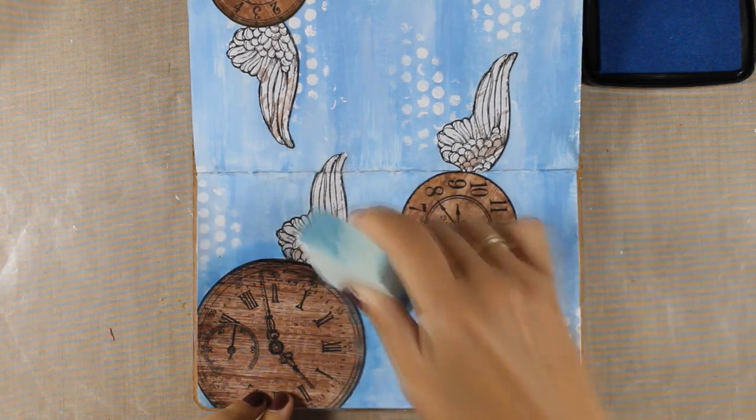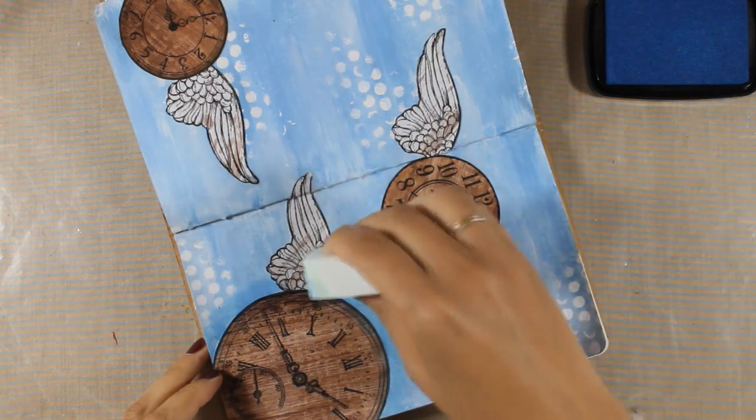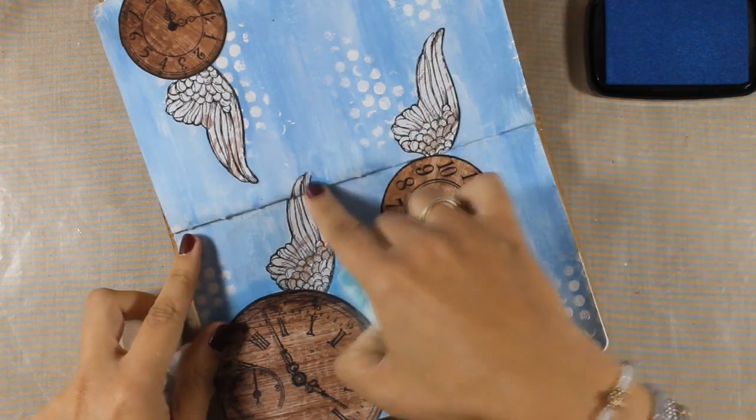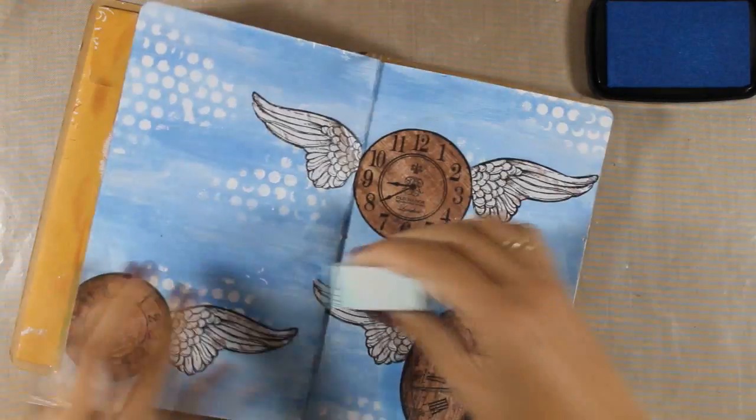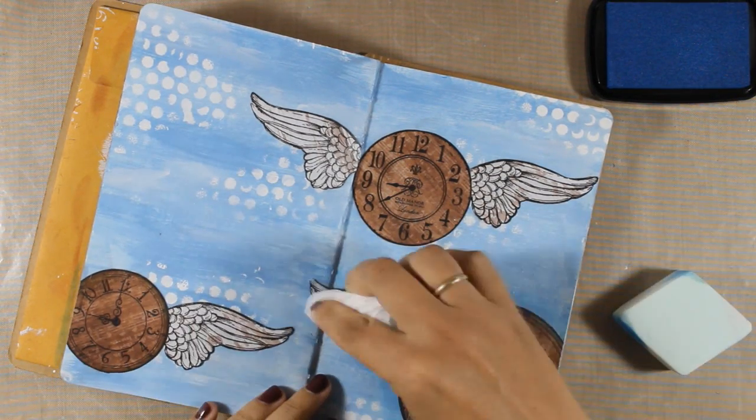That gives you those nice edges so you can go easily all around the image. Notice that I don't really mind if I go over my images because I can wipe them off and make them clean again with some baby wipe before my ink dries.